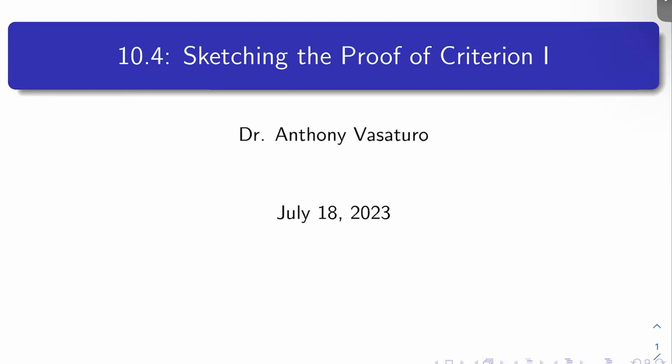Welcome back to the next video, everybody. Today we're going to sketch the proof of Criterion 1. This is the congruence ideal criterion on isomorphisms of complete intersections — the first of two criteria on isomorphisms of complete intersections developed by Wiles to prove R equals T in the proof of Fermat's Last Theorem. So let's get into it.